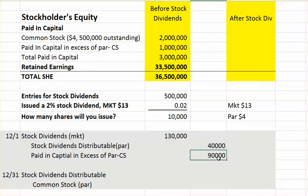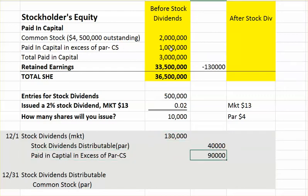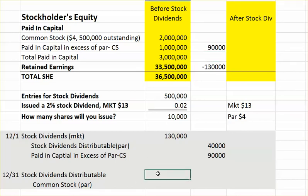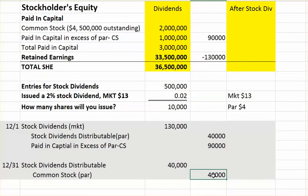The two things that are going to affect stockholders' equity here: retained earnings at the end of the year is going to be decreased by the amount of dividends declared, so we would take out $130,000, and then paid-in capital in excess of par is going to go up — that is an equity account — by $90,000. On the date of distribution when you actually distribute the stock, you're going to debit your liability account stock dividends distributable and credit the equity account common stock, and that equity account increases by $40,000.